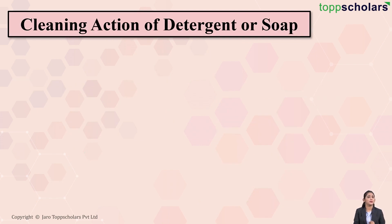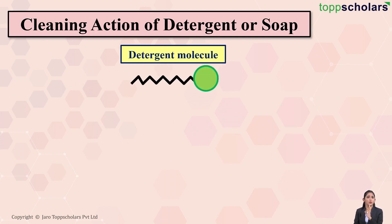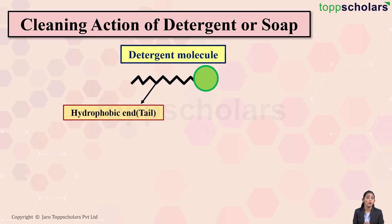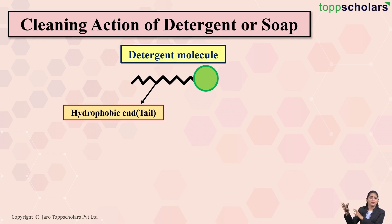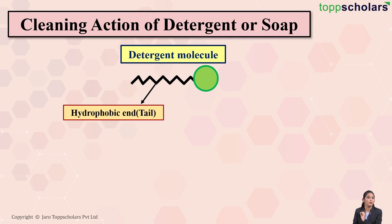Have you ever thought how detergents actually help to clean or wipe away dirt? If you look at the detergent molecule, you will notice it somewhat looks like this. It has a wriggly tail which is the hydrophobic end. Hydrophobic means water-hating, which means it keeps itself away from water — the hydrophobic end runs away from water.